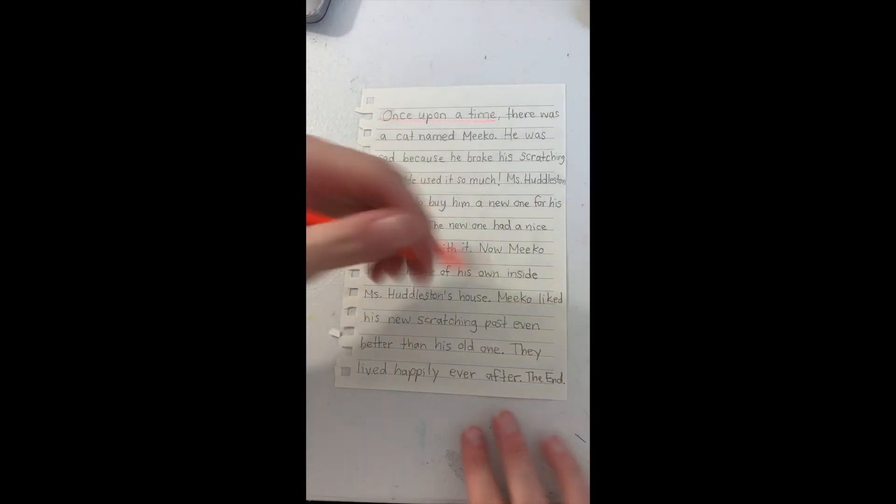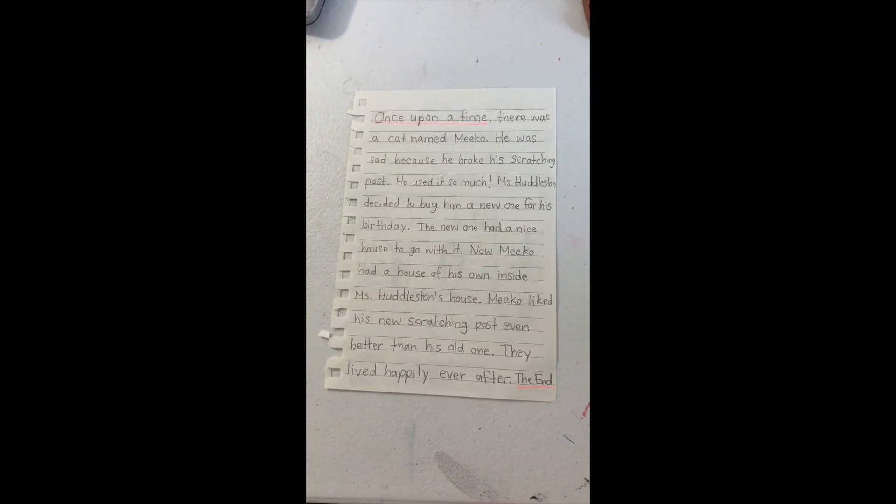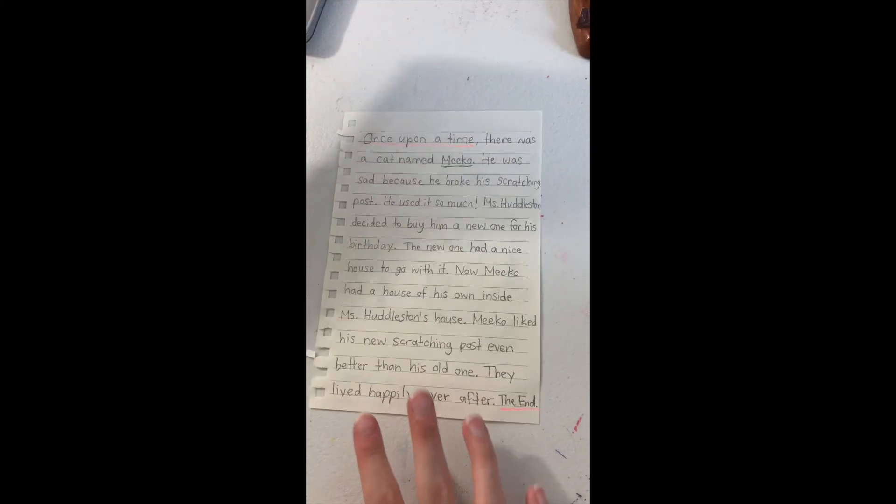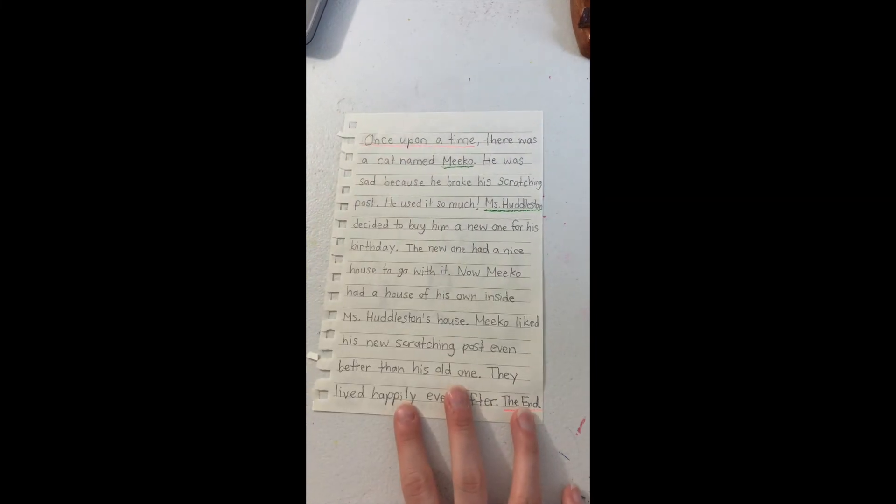Now, I'm finished. So, here I have my finished story. Remember, I have the beginning and the end, once upon a time, and the end. I also have the other parts of my story. I have the characters, Miko and Miss Huddleston, which you can see I underlined in green.